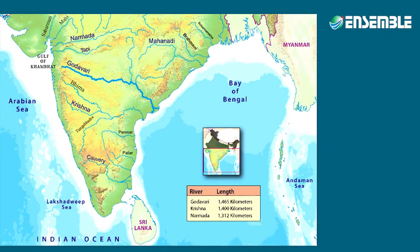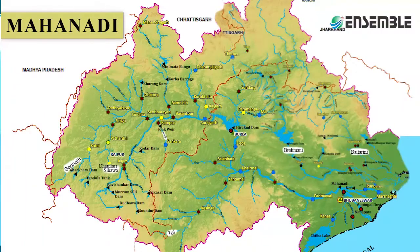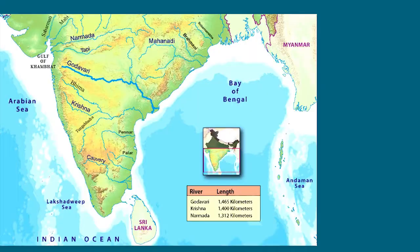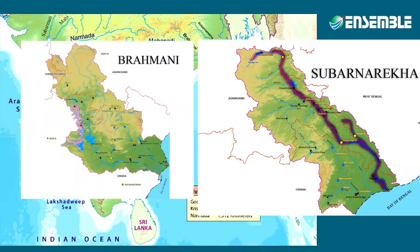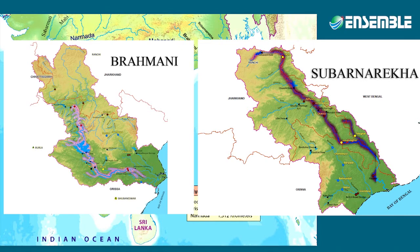For a long time it was thought that the Mahanadi originates from the southern margin of the Amarkandak region. In fact, it has been proven beyond doubt now that Mahanadi originates from Sihawa mountain in Chhattisgarh. The Subandreka and the Brahmani are the rivers which flow between the Ganga and the Mahanadi deltas, joining the Bay of Bengal after flowing in east and southeast directions.